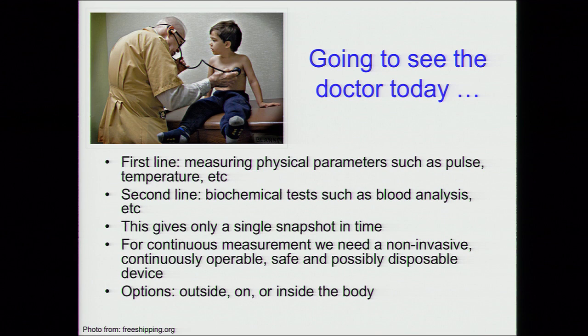Going back to what happens today in healthcare: if we feel ill, we will go visit a physician. The first thing they would do is perhaps take our pulse or have a look at us — do some physical measurements. That's the first line of data going to the medical practitioner. But that's typically not enough. If they see that there's something wrong, they would prescribe perhaps a blood test or a urine test. In order to get a sense of what happens in people's body, we need to have a chemical interface and a chemical analysis to get a sense of whether a person is healthy or not.